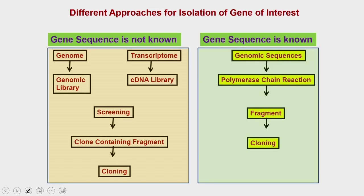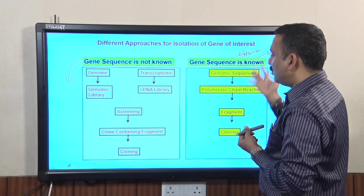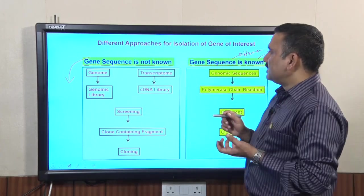In scenario one, you do not know the gene sequence you want to clone, but you know its character. In scenario two, the gene sequence is known — meaning the genome of that organism has been completely sequenced. Examples include humans, E. coli, Mycobacterium tuberculosis, and many other bacteria. This pool of genomic information is increasing over time, so this approach is used more often nowadays.